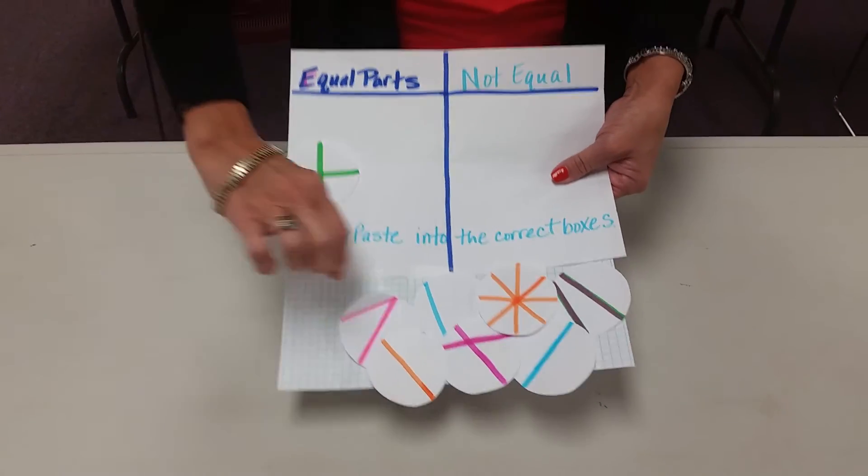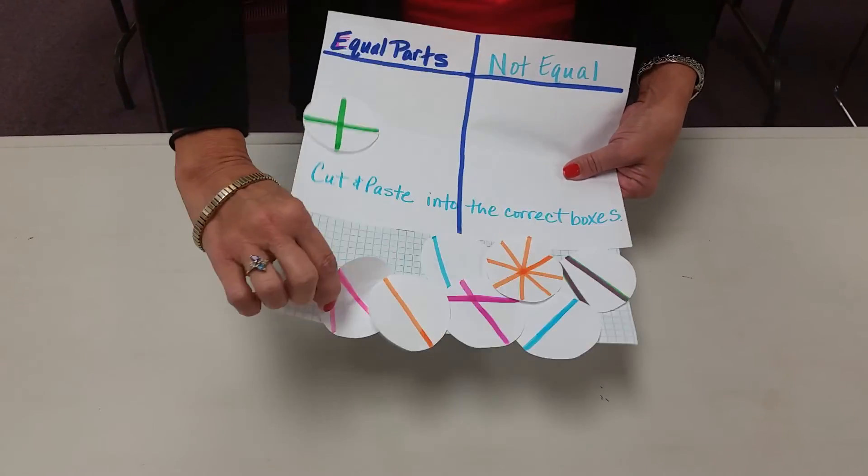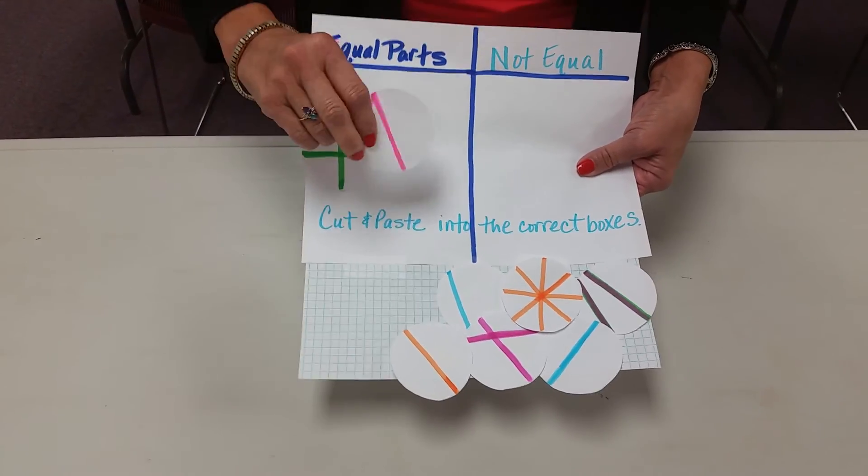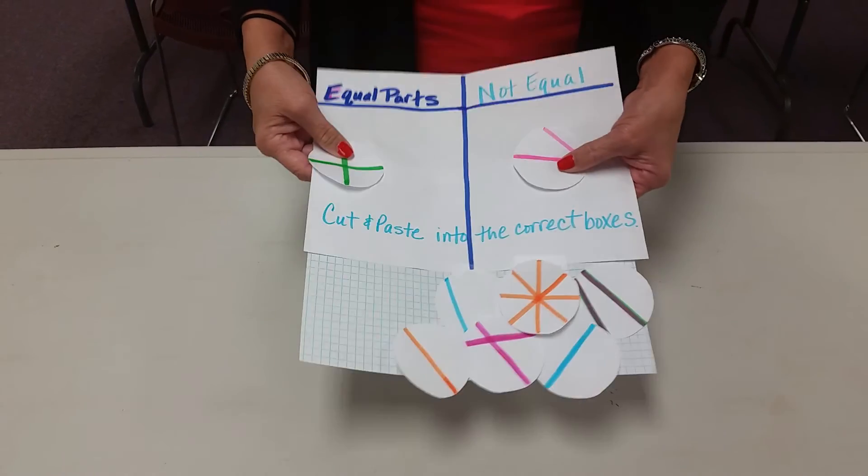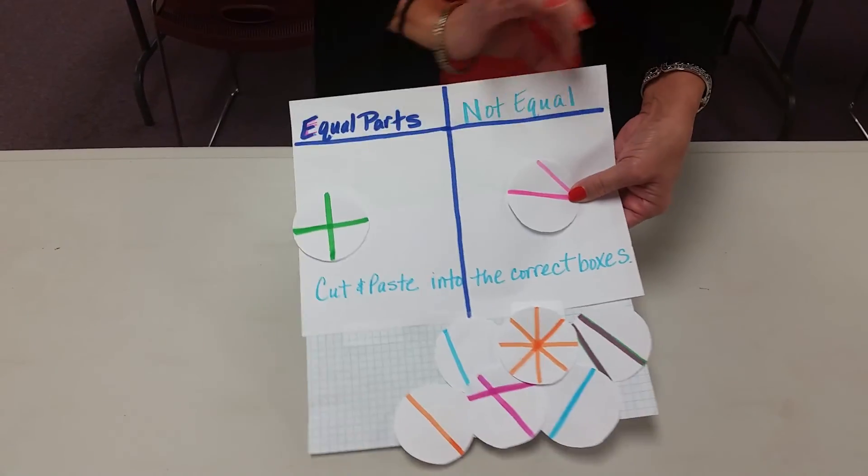We're taking another look at another circle. They're going to examine it and decide whether or not it is equal. They're going to hopefully say it is not and place it in the not equal part.